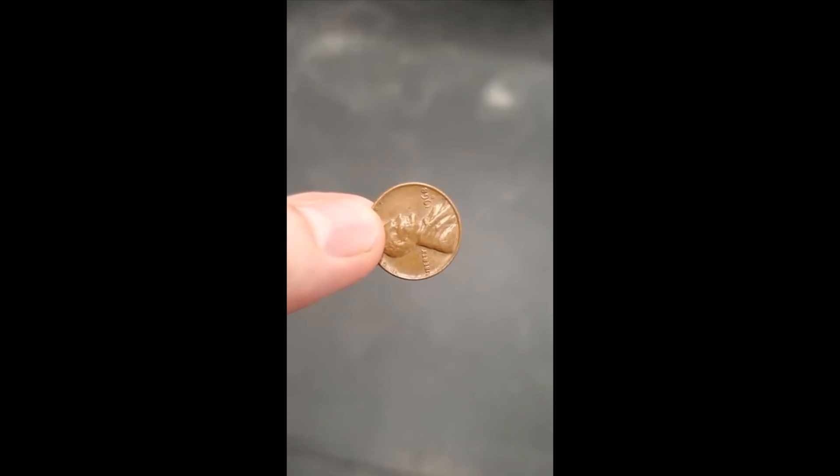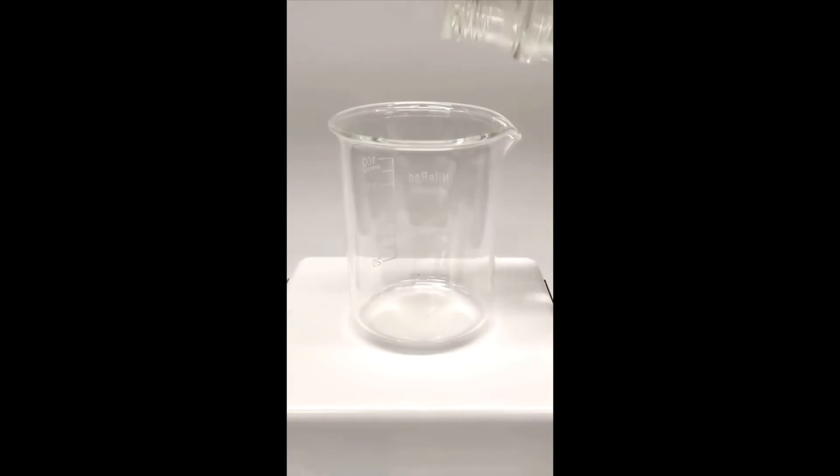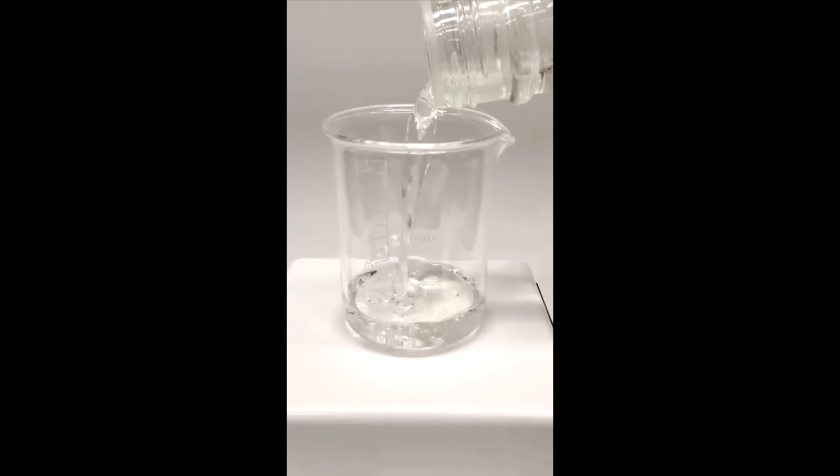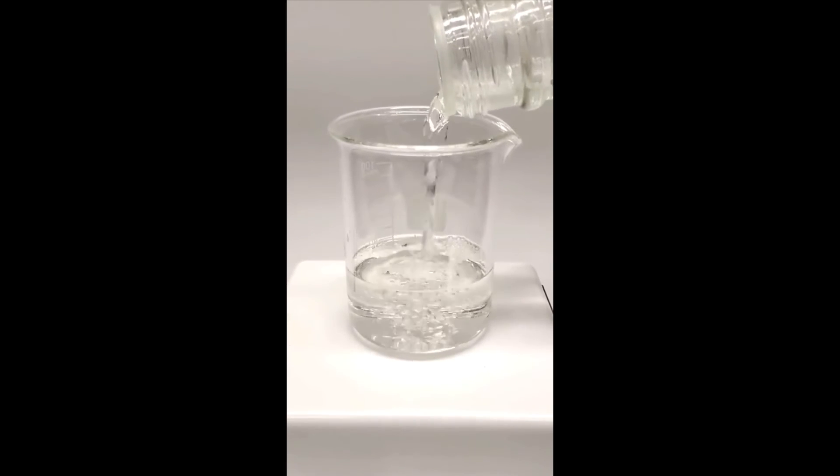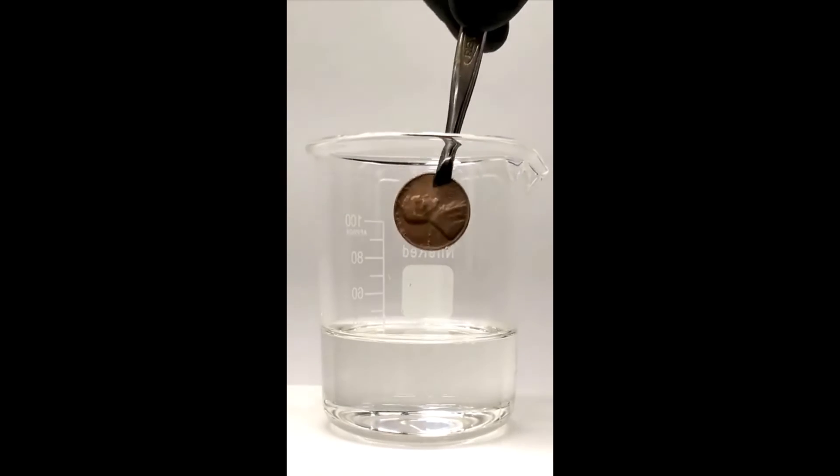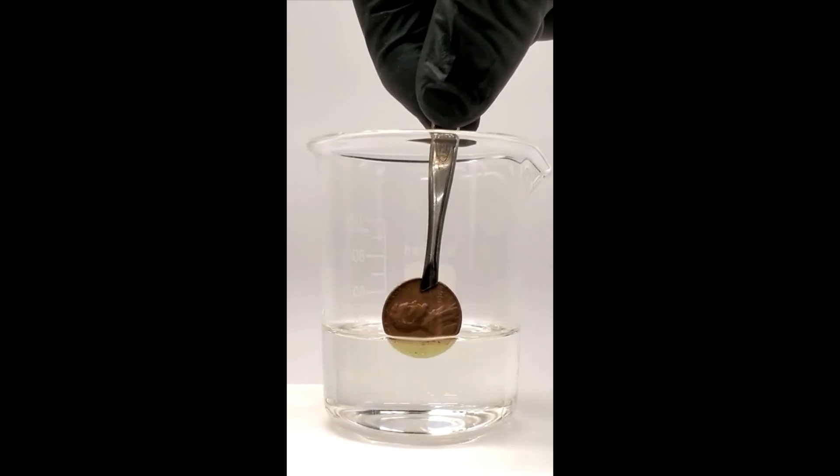So today I'm going to be destroying this poor penny for no reason. To do this, I just need to add some nitric acid to a beaker. Now if I put a penny in, it immediately starts eating it.